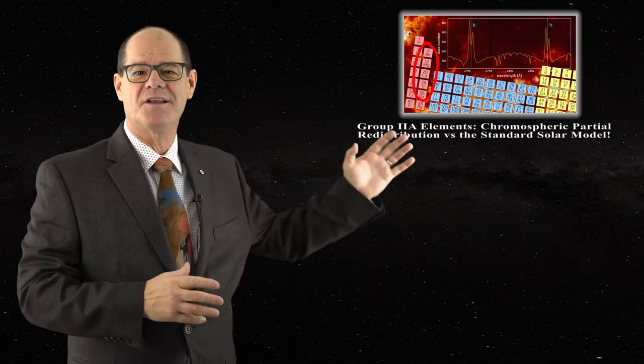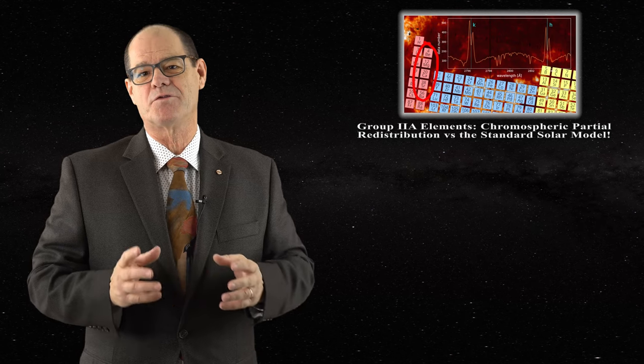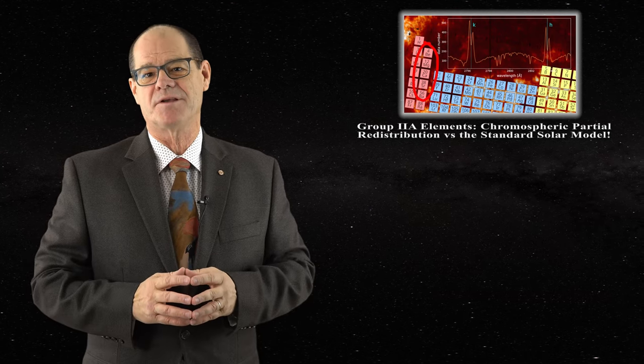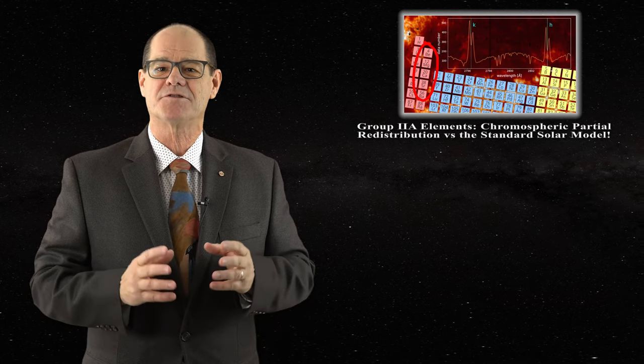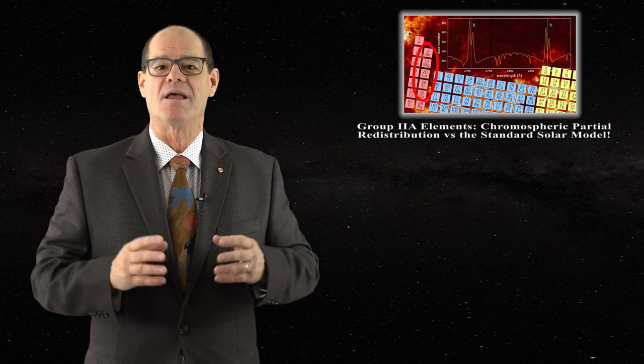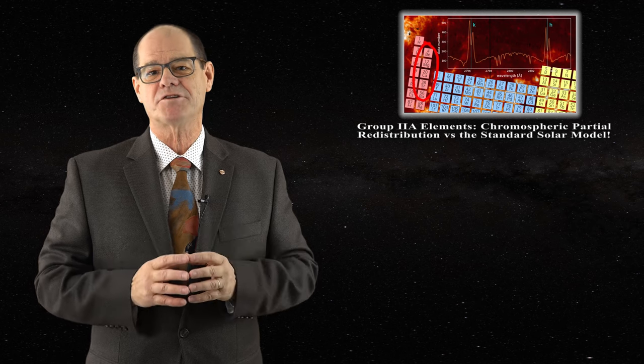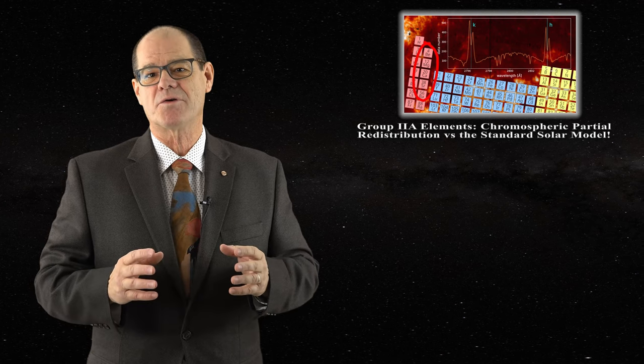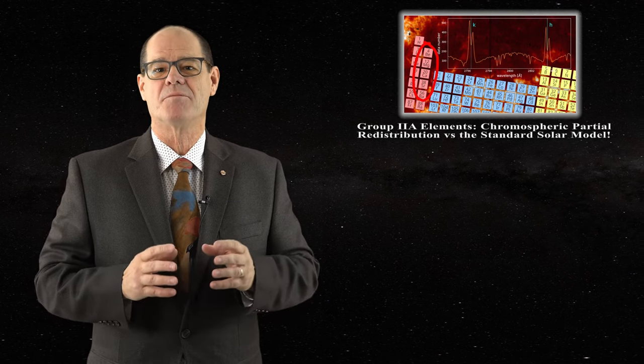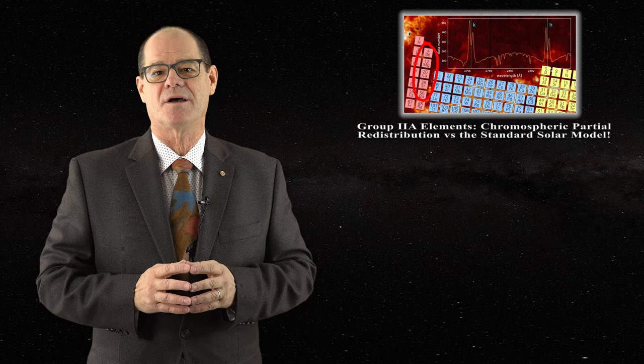Hello everyone and welcome to SkyScholar. A couple weeks ago with the release of this video I began to explore the group 2A elements namely beryllium, magnesium, calcium, strontium and barium. In that video I initially focused on the need to invoke partial redistribution in order to account for the line shape of the most prominent chromospheric lines.